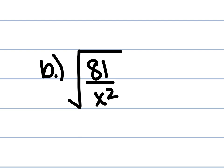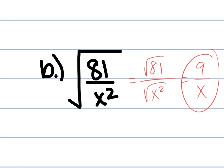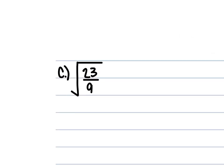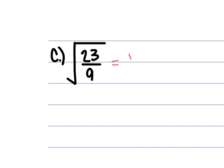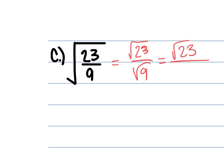Letter B: the square root of 81 over x². Split it up: the square root of 81 over the square root of x². The square root of 81 is 9, and the square root of x² is x. So the answer is 9 over x. Letter C: the square root of 23 over 9. Split it into the square root of 23 over the square root of 9. Does 23 have any factors other than 1 and itself? No. So we leave it as the square root of 23. The square root of 9 is 3. Answer: the square root of 23 over 3.